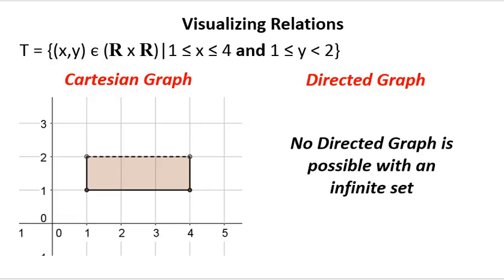Let's look at another example of visualizing relations — in this case, the infinite relation T discussed briefly earlier. In this relation, x comes from the real numbers, y also comes from the real numbers, where x is between 1 and 4, and y is between 1 and 2, but not inclusive of 2. So like graphing other inequalities, the boundary points for x are included, but y equals 2 is a dashed line meaning it's not included, and the endpoints are hollow circles. There is an uncountably infinite number of points in this relation, so no directed graph is possible — you just couldn't graph all the nodes.